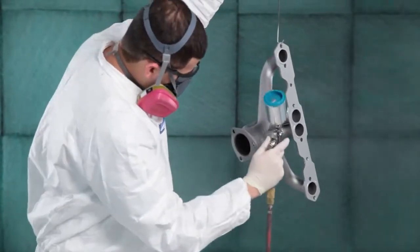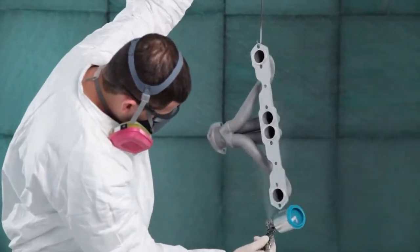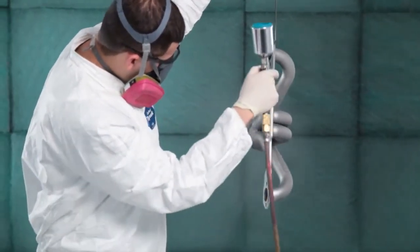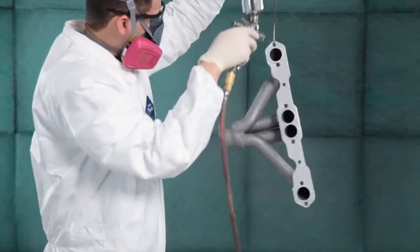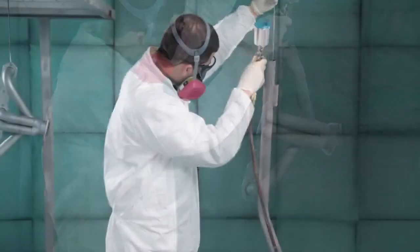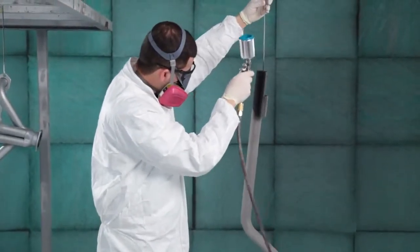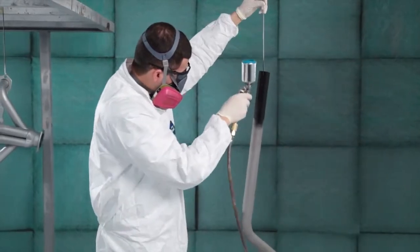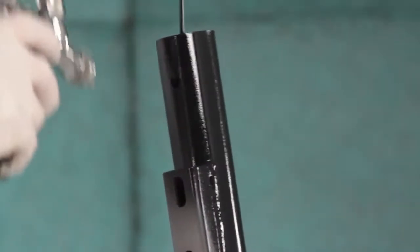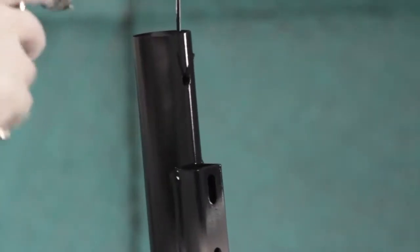When spraying, strive for even coverage. You're seeking a 1 to 2,000th coating thickness. Spray with sufficient volume so that the Cerakote doesn't dry spray, which is when the coating dries in the air before reaching the part. When spraying, the part should appear wet, but not so wet that it wants to run.